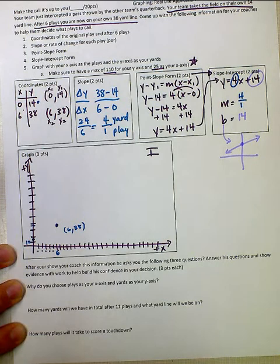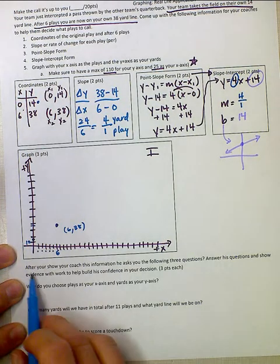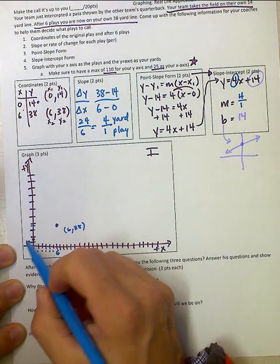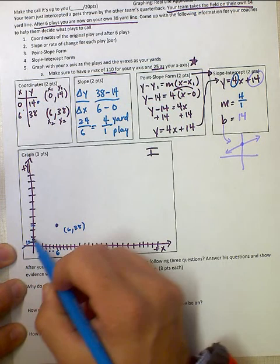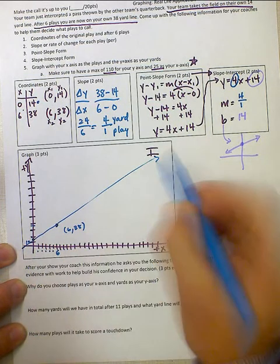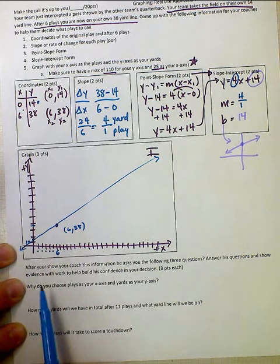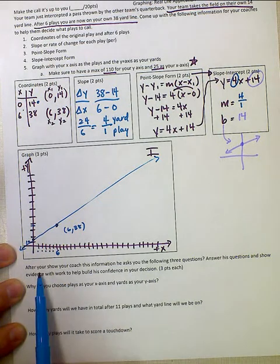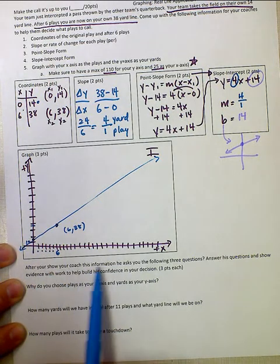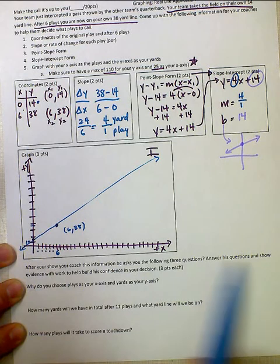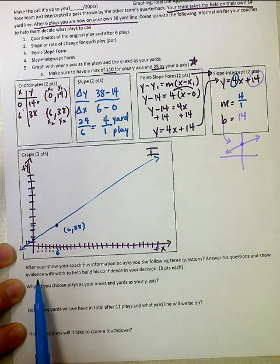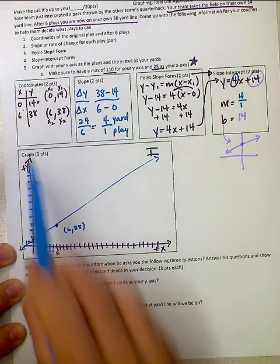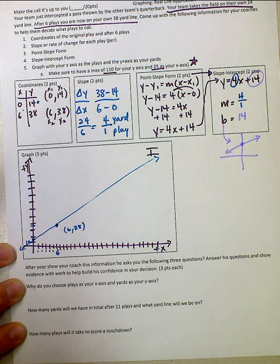Now, a couple of things it asks you after, so we have this graph here. After you show your coach this information, it asks you the following three questions. Basically, it's asking you, why did you choose x and y as your axis?